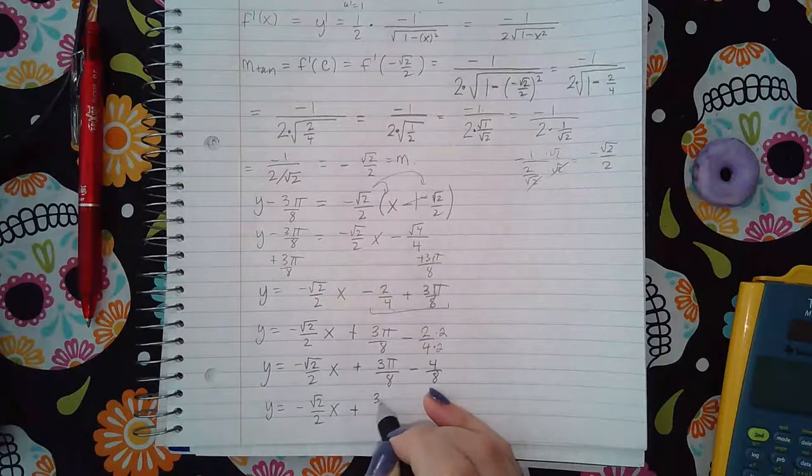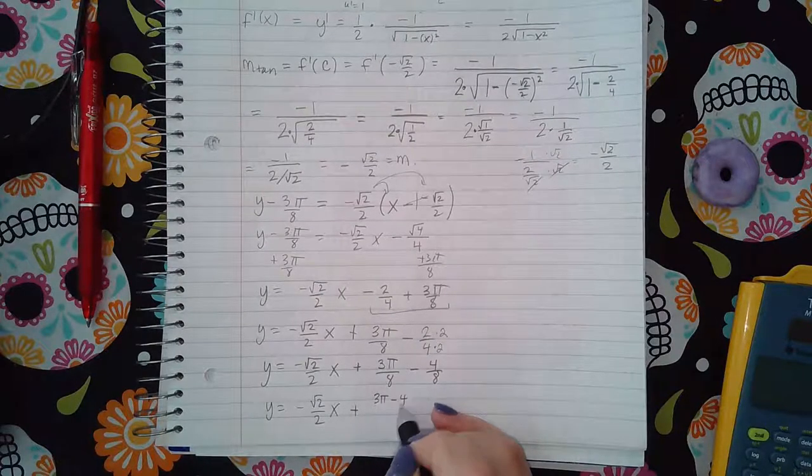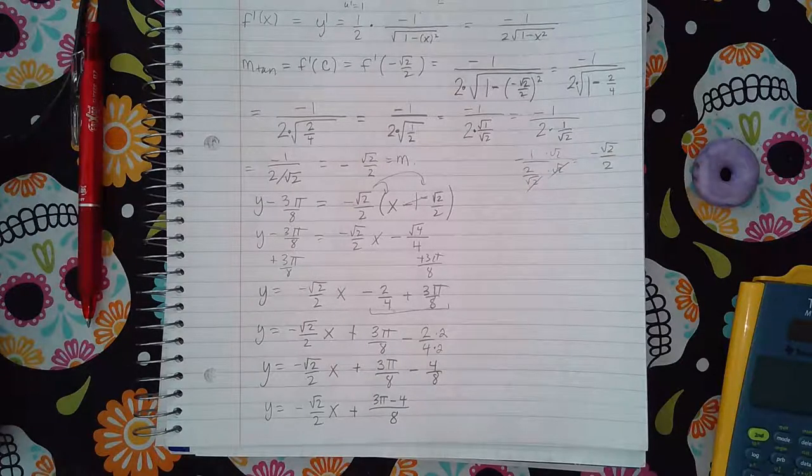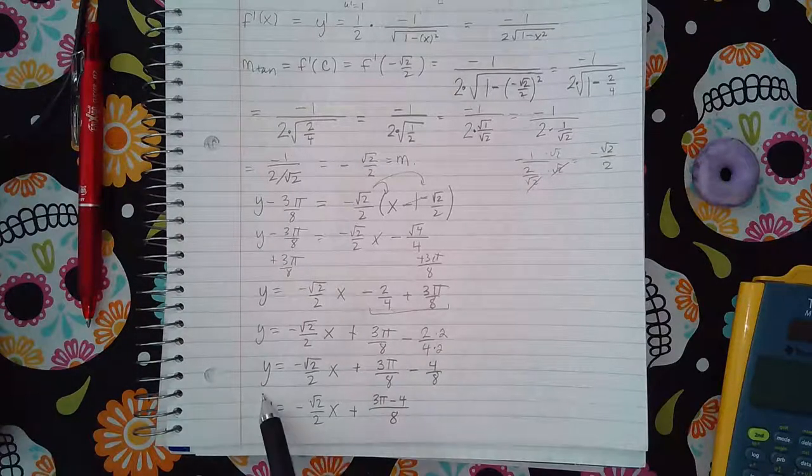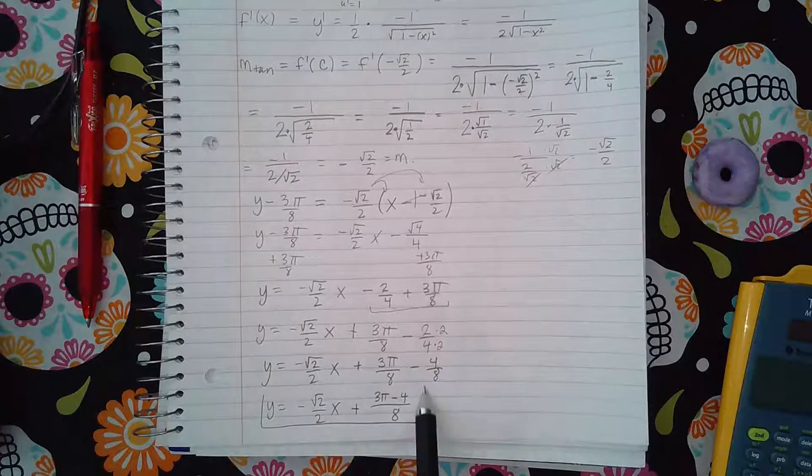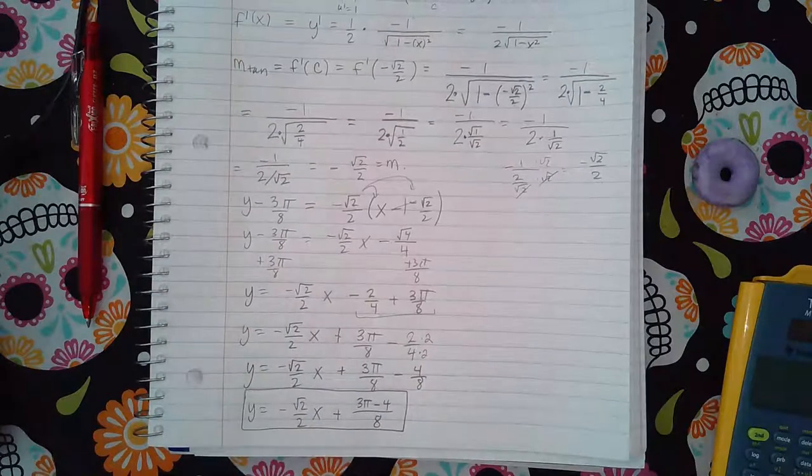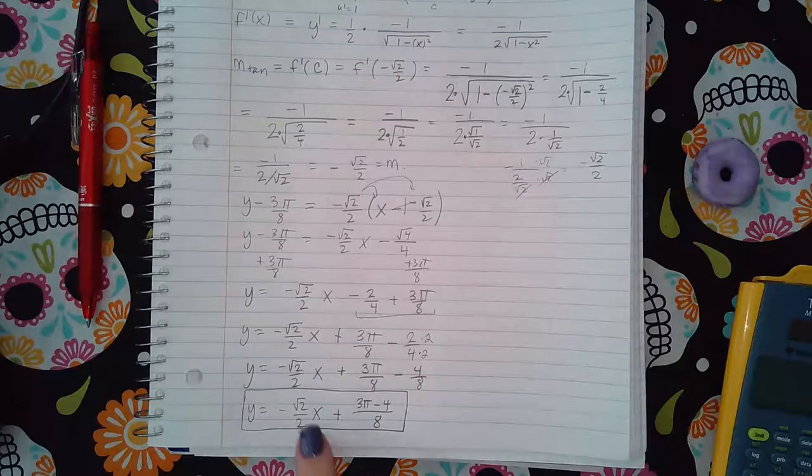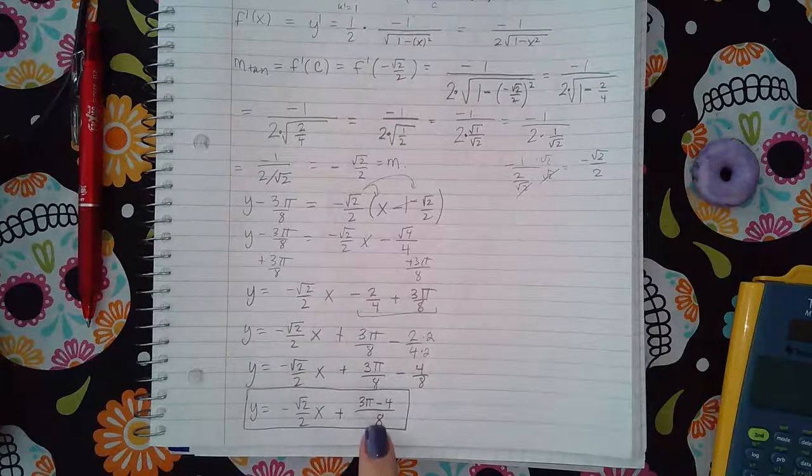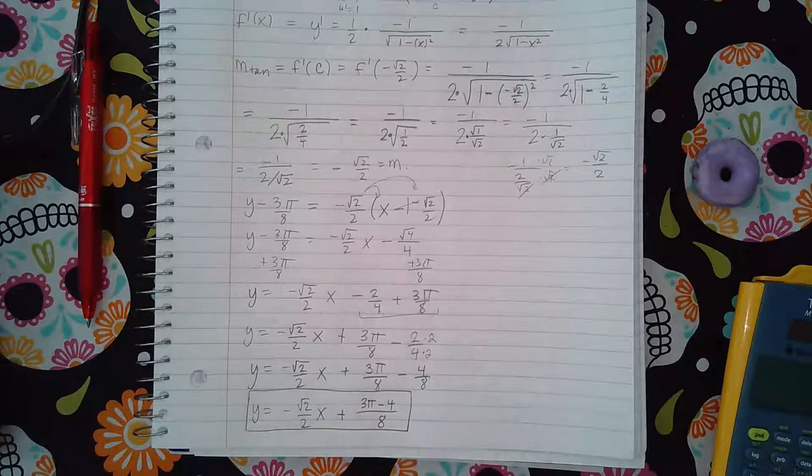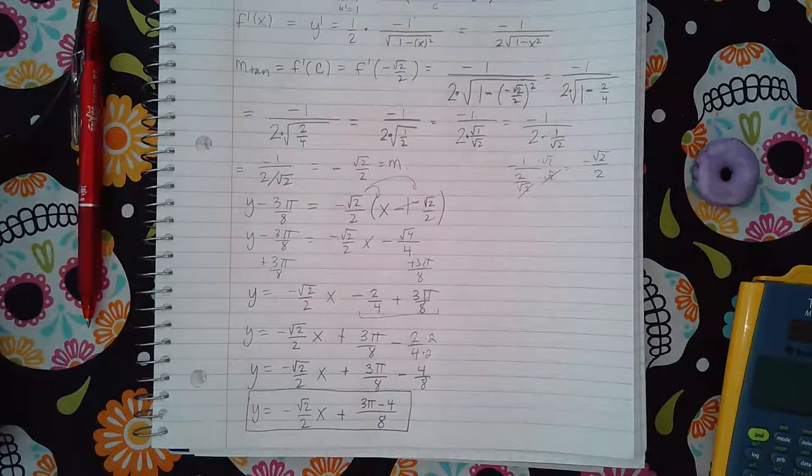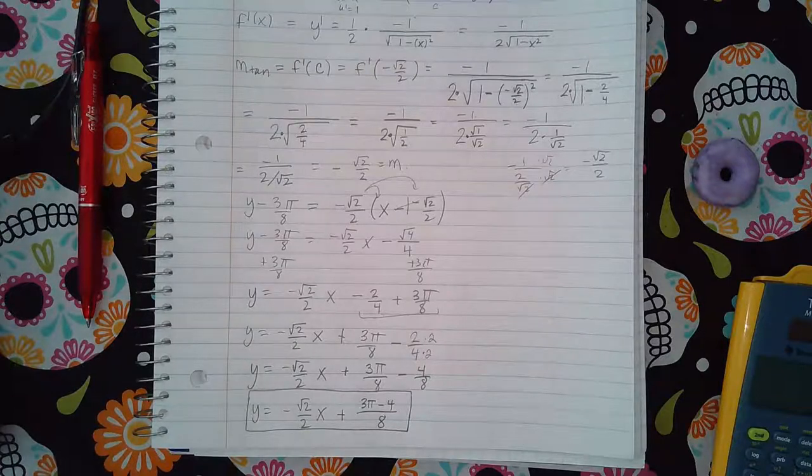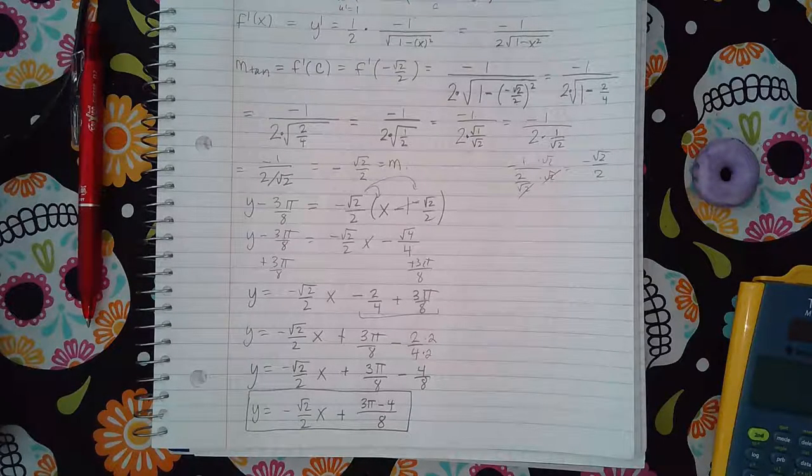I get negative square root of two over two x, and then I get plus three pi minus four over eight. So this is going to be the answer that they're looking for in the homework. They want just one x term and then one constant term, so make sure you combine your like terms. And that is the end of the derivative of inverse functions section.